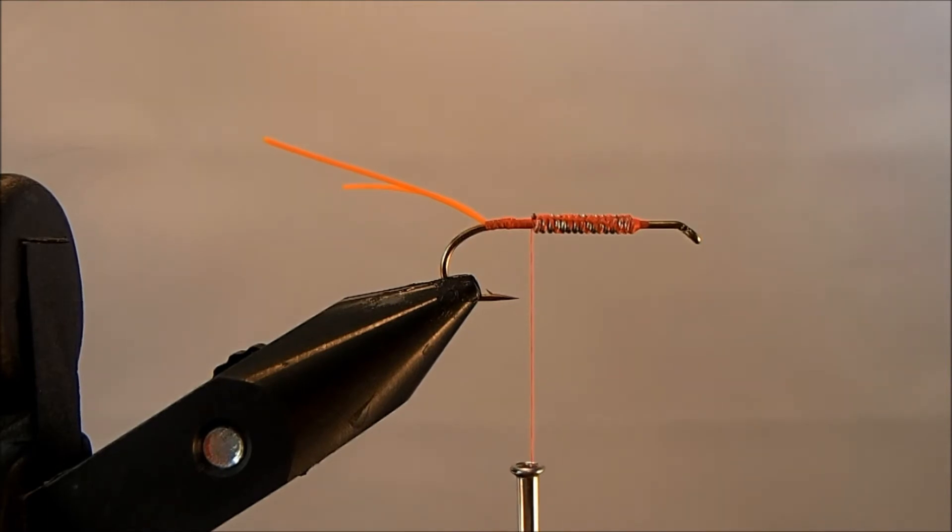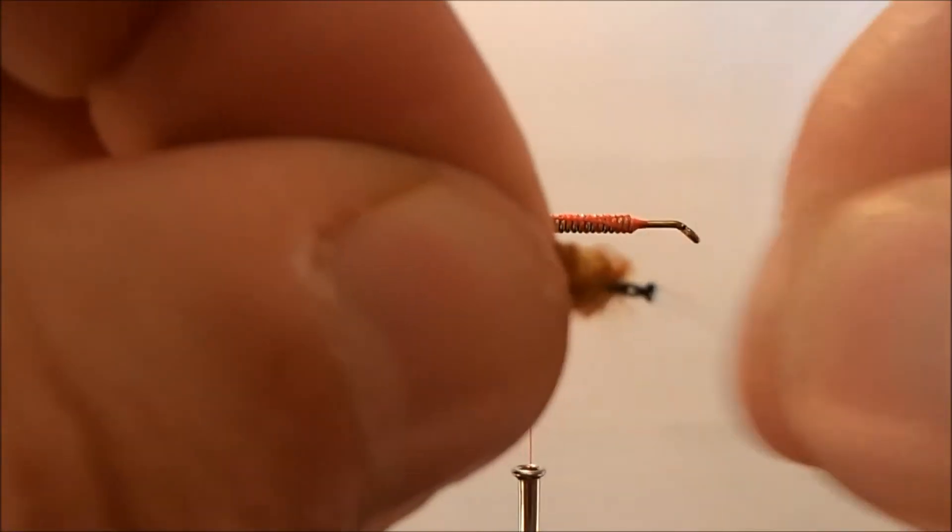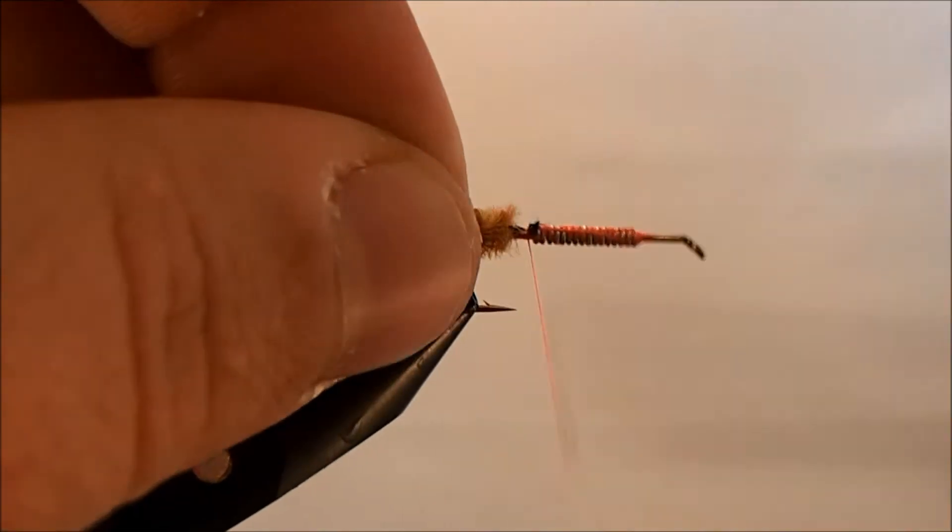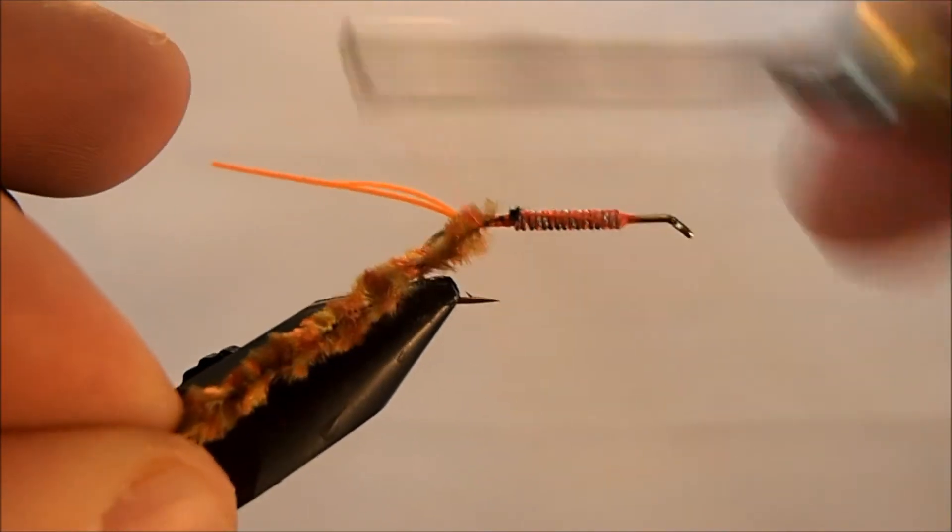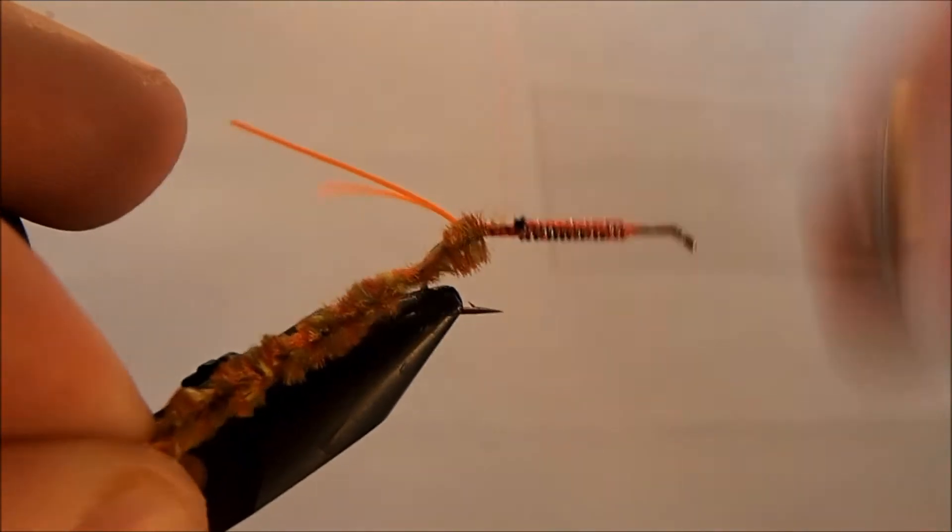I'm going to add in my legs before I start to wrap any chenille. The chenille that I'm going to use is a variegated, this is a rust and olive. I'm going to take just a section of that off and clean off the tip exposing the core so I have a good tie in point behind the lead.